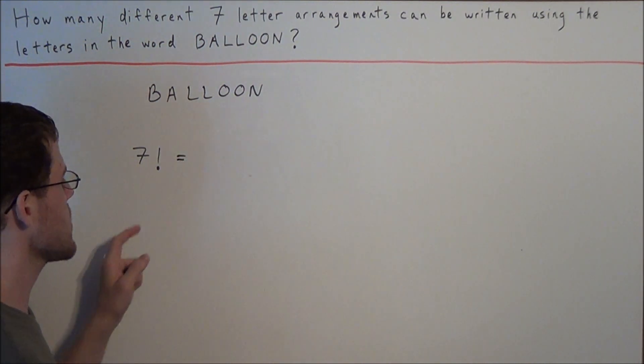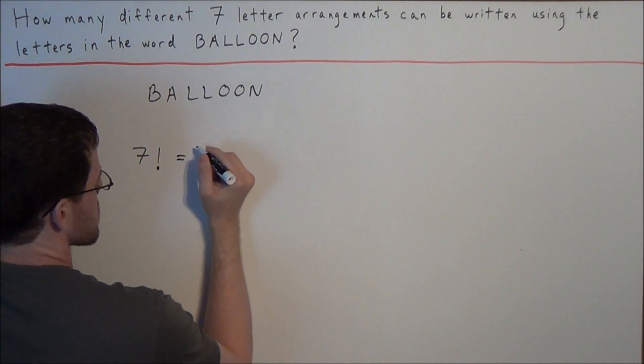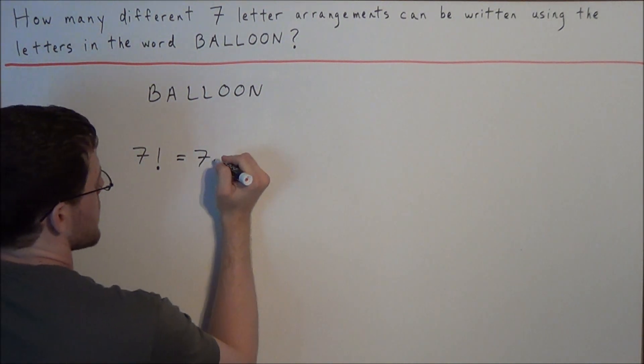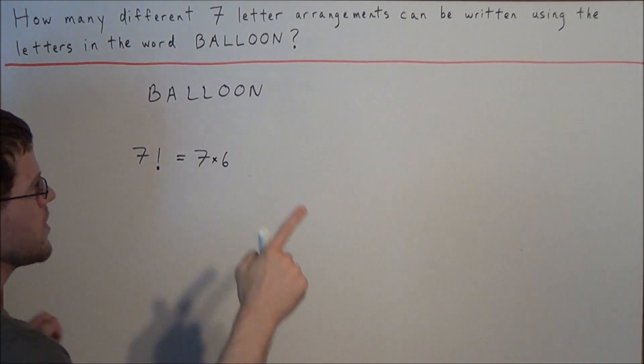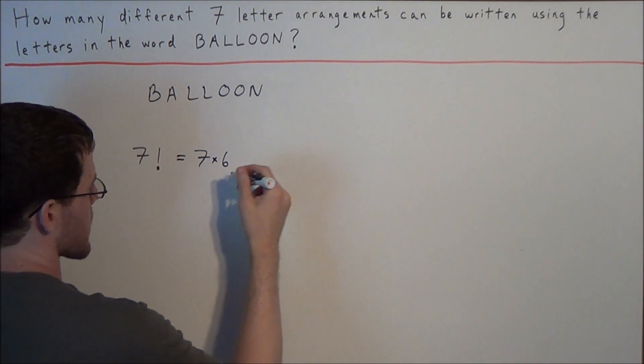This is true because if we chose the first letter, we have seven letters to choose from so that's seven options for the first letter. But now we would multiply by six because if we choose a letter, now we have six letters to choose from. So now we have six choices for the second option.